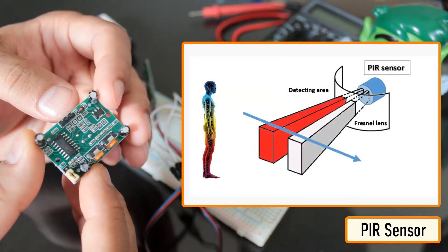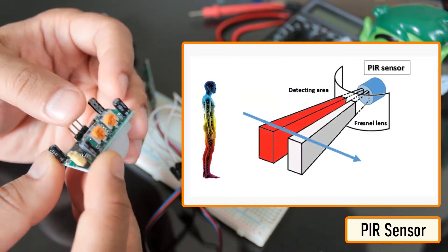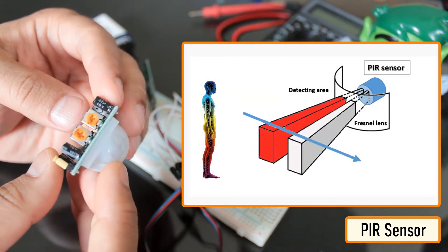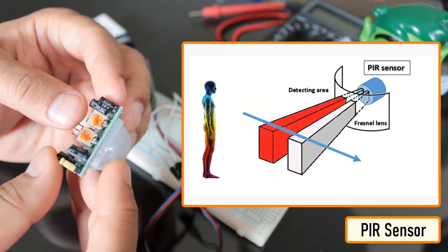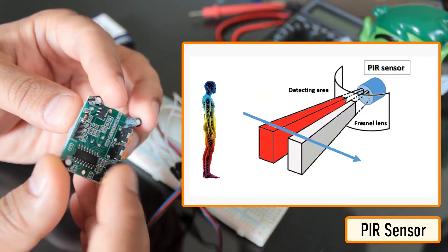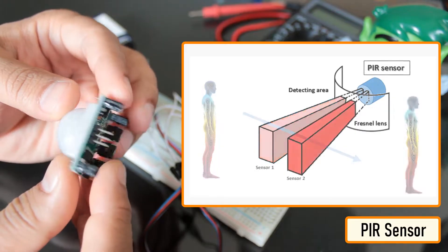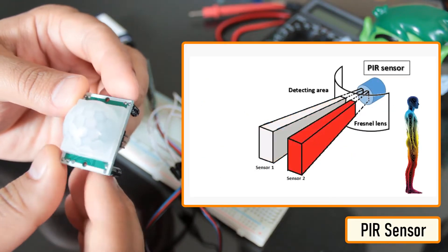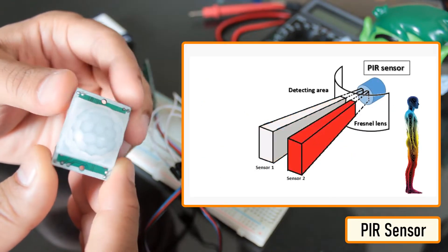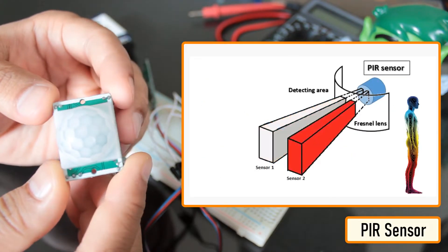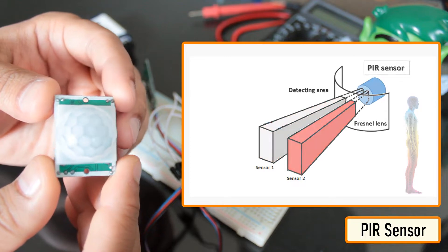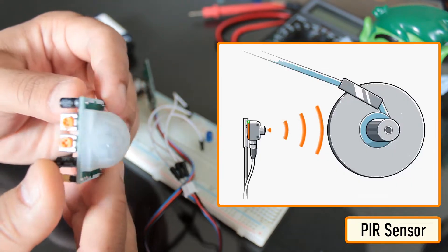However, since PIR sensors detect movement from living objects, they can generate false alarms. These sensors are also inefficient in hot environments as they rely on heat signatures.